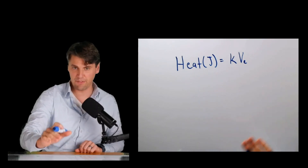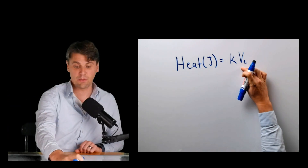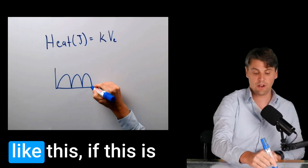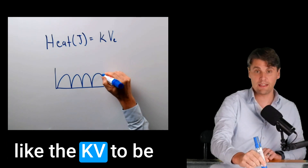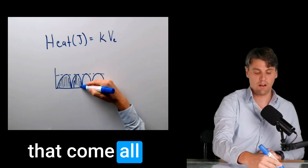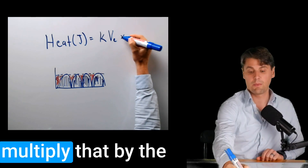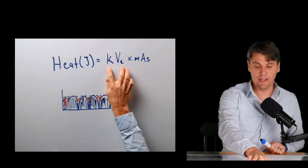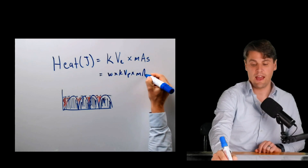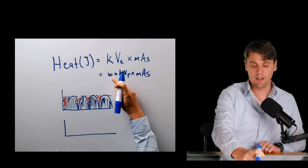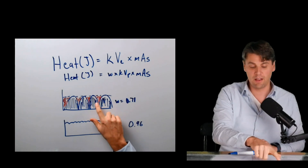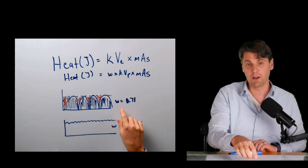If our KVP was perfect, if it was a nice flat KV, then this would just be the KVP, but this is the KV effective. If we have a full wave rectified circuit, we would like the KV to be right here, but what we actually have is KVs in this range that come all the way down and back up. We can break this down into W, a weighting factor, times the KVP times the MAS. You'd like W to be close to one. If it's a nice perfect system, W is one. For the case of full wave rectification, W is 0.71. The blue areas in comparison with the red areas determine what W is, so that's 0.71.